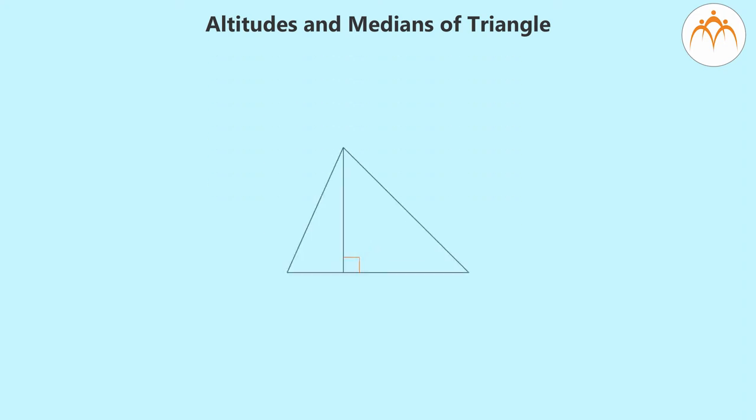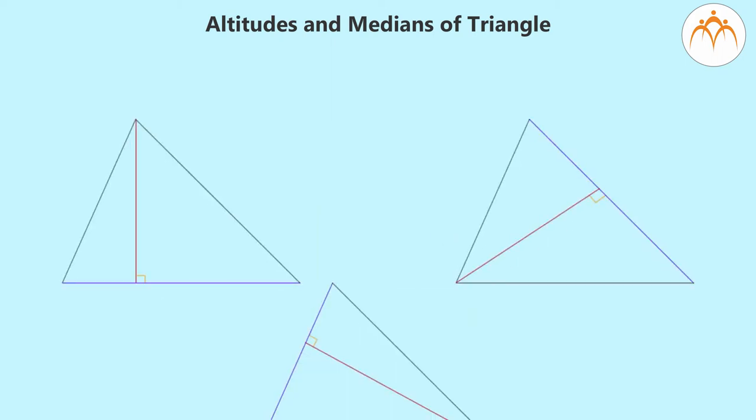Altitude of triangle is a segment drawn from a vertex of triangle perpendicular to opposite side of the triangle, as we can see in this figure. We can use other vertices as well to draw altitudes of a triangle. Hence, a triangle has three altitudes. Altitude of a triangle drawn from a vertex gives height of the vertex, considering opposite side as base.